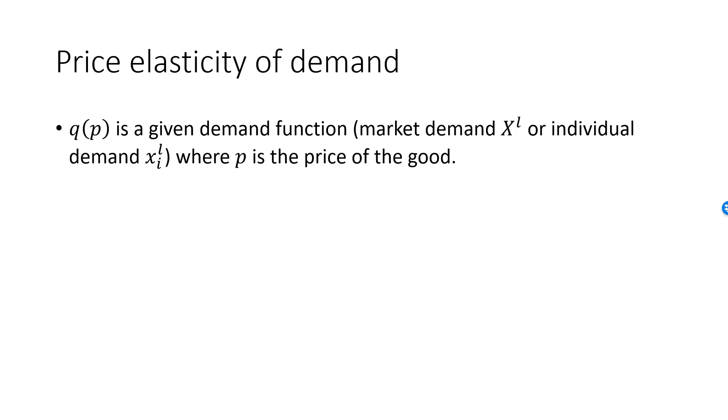The demand function depends on the price of the good, denoted by P, as well as on other variables such as other prices and income. However, we will focus on its dependence on its own price, keeping all other variables fixed.